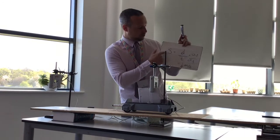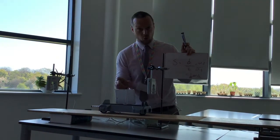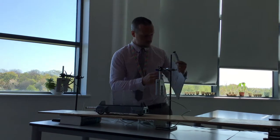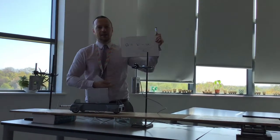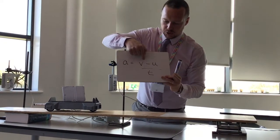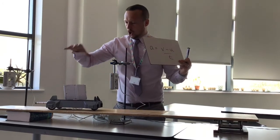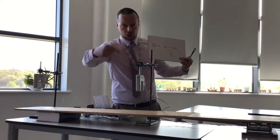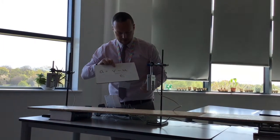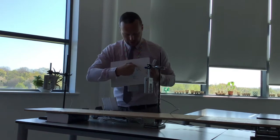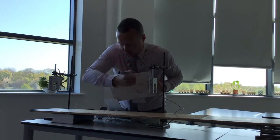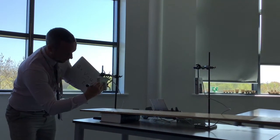So the light gates work out speed using the distance, the width of the interrupt card, and the time that it interrupts the light for. The next thing that we need to understand is the acceleration equation. Acceleration equals a change in speed divided by time. Because we have got two light gates, we can have a starting speed and a final speed. The starting speed is U, so this light gate here works out U. This light gate here works out V, the final speed.